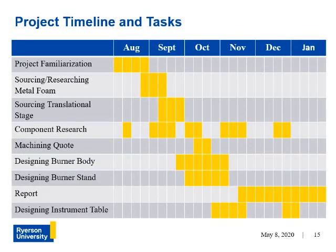Project timeline and tasks. The Gantt chart shows the timeline progression of the project tasks. The majority of the design tasks were heavily dependent on component research and what product information could be gathered from the retailer and supplier. The process throughout involved designing around available products. The project began with topic study and familiarization with combustion research. Components that were difficult to source, such as the metal foam and translational stage, were researched first.